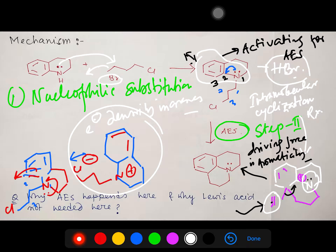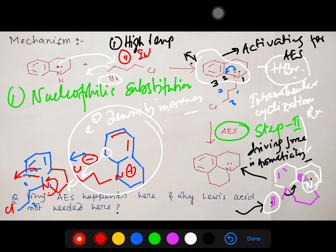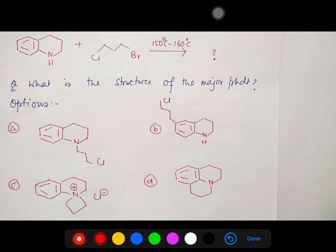For aromatic electrophilic substitution we normally need a Lewis acid, but in this case reaction occurs in the absence of any Lewis acid, because nitrogen increases the electron density at this carbon, which then attacks. This is not generally observed, but two points make it possible: first, high temperature; second, it is an intramolecular reaction. These two points make this process favorable such that, in absence of any Lewis acid, this reaction occurs.